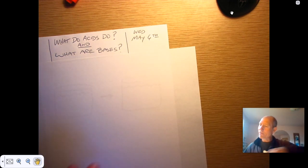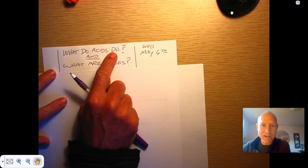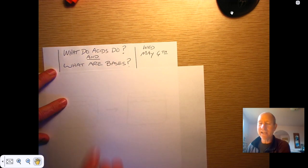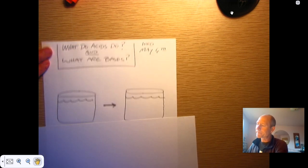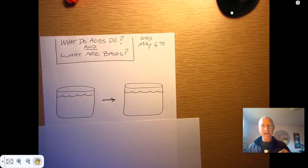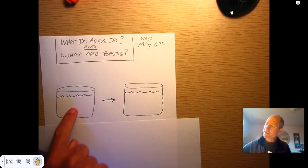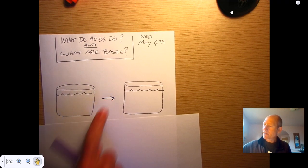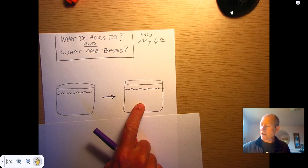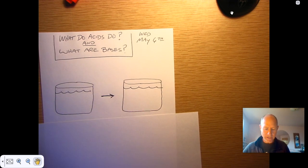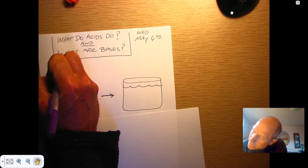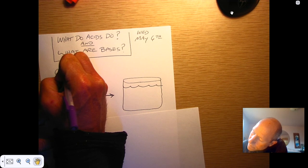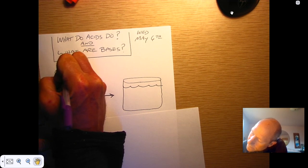So, what does that allow them to do? That's what we're talking about today. And what's it have to do with bases? What even are those? So, let's say we got a container of water here. And this is a container of water before something happens, chemical change. And this is the container of water after the chemical change happens.